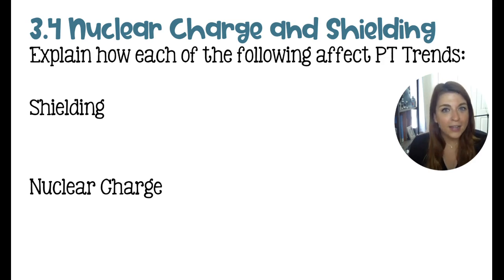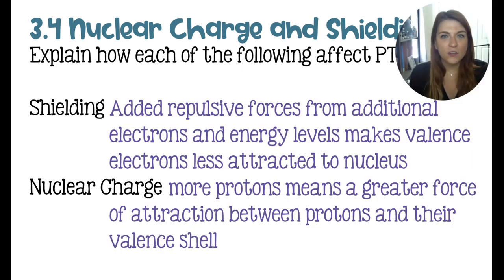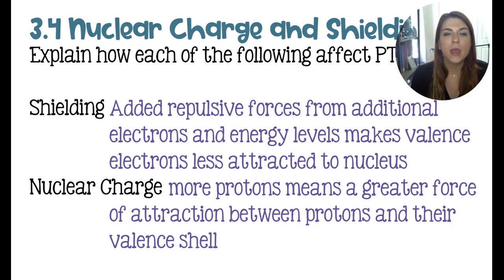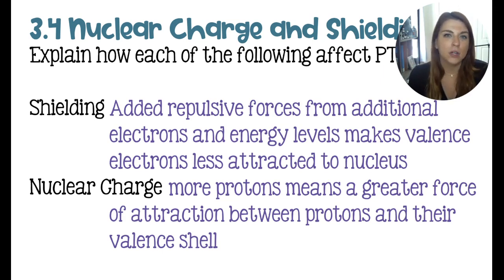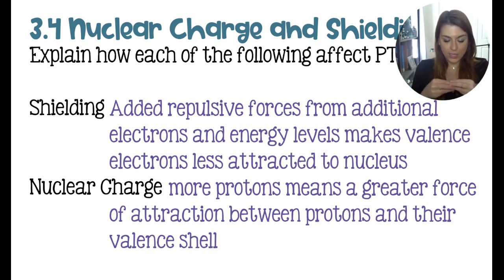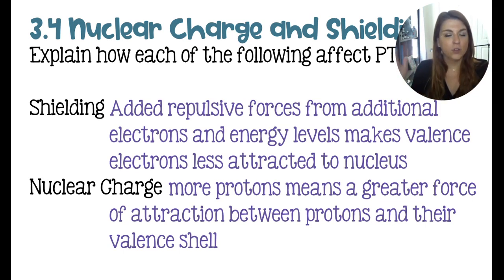You can't just know the periodic table trends — you have to understand why those trends occur. So take a minute to explain how shielding and nuclear charge each affect a periodic table trend. Shielding affects the trends going down a column of the periodic table. As you go down, we add a principal energy level, which increases the repulsive forces between electrons. This means the nucleus is less and less attracted to the valence electrons because they are getting further away with increased repulsive forces.